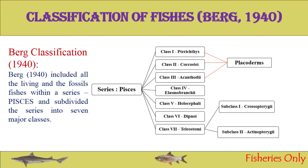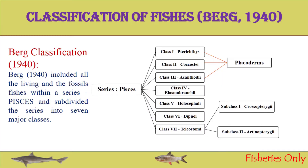The fourth class is Elasmobranchii — fishes whose endoskeleton is made up of cartilage. The fifth class is Holocephali, meaning 'entire head,' referring to fishes in which the upper and lower jaws are completely developed. The sixth class is Dipnoi, the lung fishes. 'Di' means two and 'noi' means lungs — these are fishes having two habitats, able to respire underwater as well as outside water.